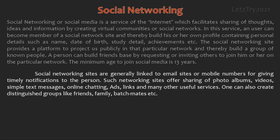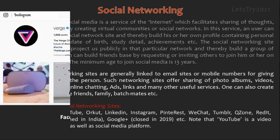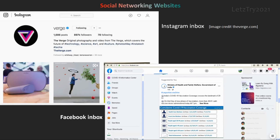A person can build a friends' base by requesting or inviting others to join on the particular network. The minimum age to join social media is 13 years. Social networking sites are generally linked to email sites or mobile numbers for giving timely notifications. One can also create distinguished groups like friends, family, batch mates, etc. Here are some examples of social networking sites. This page shows two popular social networking inboxes: Instagram and Facebook.